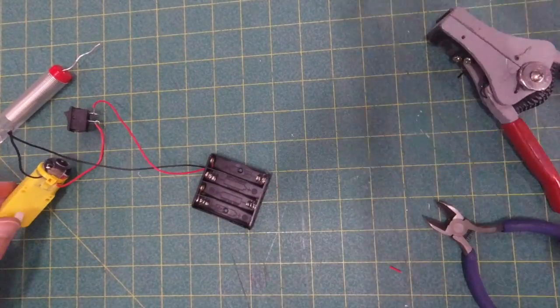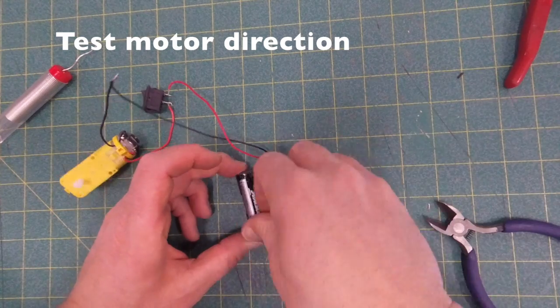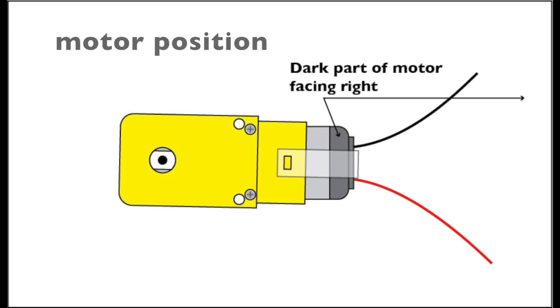Now what you want to do is test the direction of your motor, so plop your batteries in. When you look at your motor, the dark side should be facing to the right. There are screws only on one side; those should be facing you when you're looking at that direction.